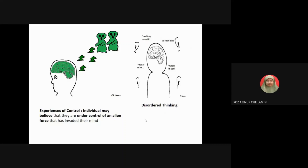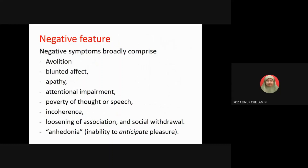Negative features are broadly comprised of avolition — a decrease in motivation to initiate and perform self-directed, purposeful activities. Blunt affect means nothing can emotionally affect the person. Alogia is a lack of interest in life activities or interaction with others, along with attentional impairment and poverty of thought or speech.